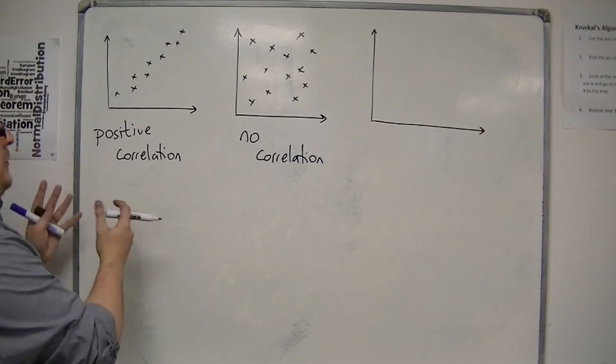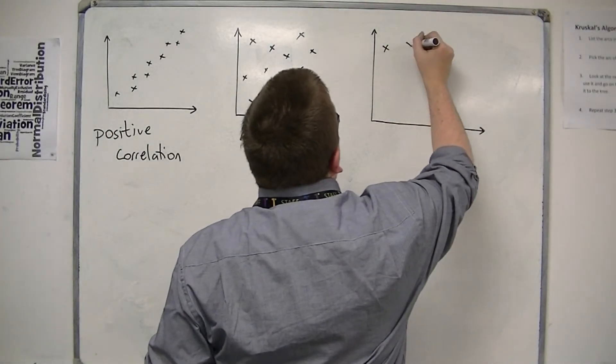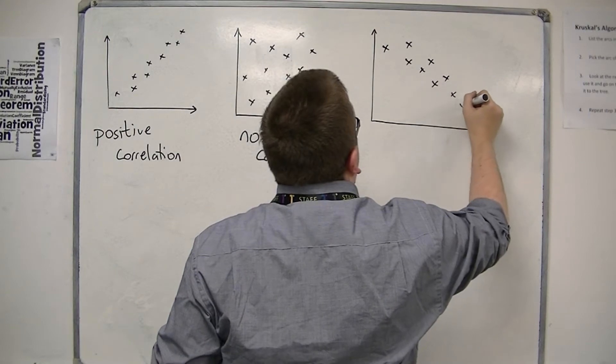And then if we've got positive correlation, it makes sense that we also have negative correlation. A negative correlation goes in the opposite direction from the top left to the bottom right.